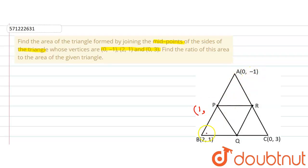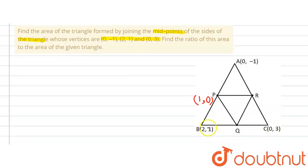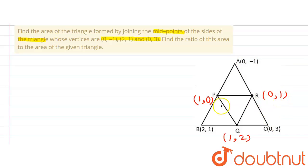Y1 = -1 plus Y2 = 1, that is -1 plus 1 = 0, divided by 2 gives us 0. So the coordinate of P is (1, 0). Similarly, the coordinates of Q: (2 + 0) / 2 = 1, and (1 + 3) = 4 divided by 2 = 2. So Q = (1, 2). The coordinates of R: (0 + 0) / 2 = 0, and (-1 + 3) = 2 divided by 2 = 1. So R = (0, 1). These are the coordinates of triangle PQR.